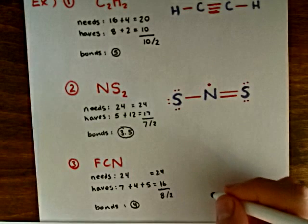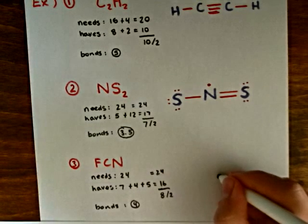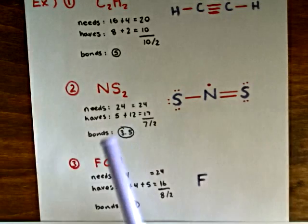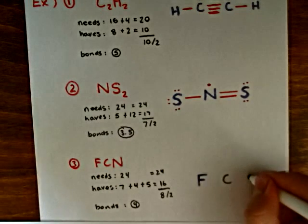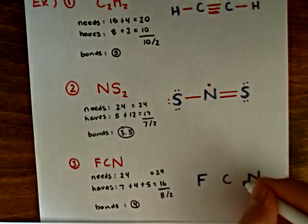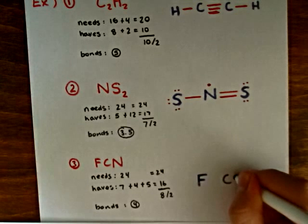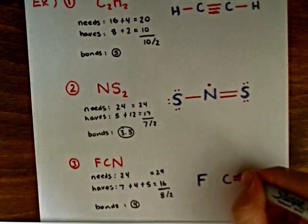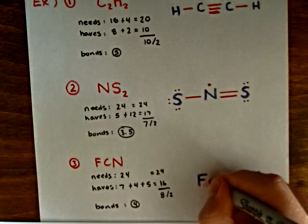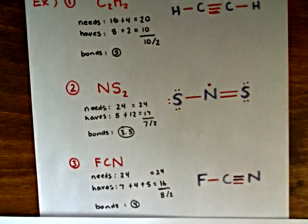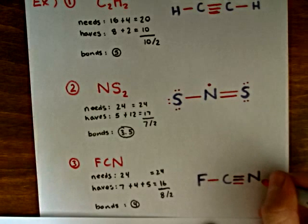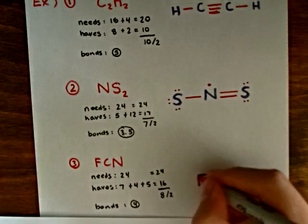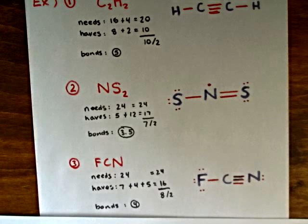Now we can draw our Lewis structure. It's going to look a lot like the formula. We know that nitrogen likes to form 3 bonds and carbon likes to form 4 bonds. We make sure that they all have a stable octet — add 2 electrons there and 6 electrons there. And that will be our Lewis structure for fluorocyanide.